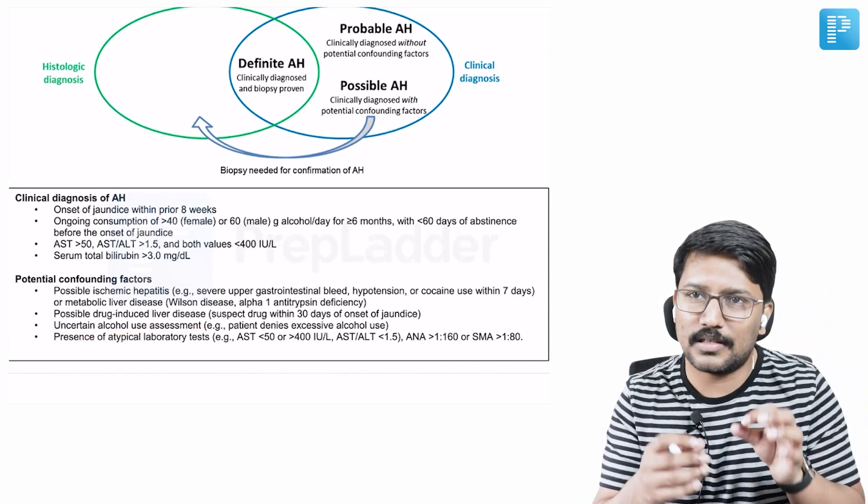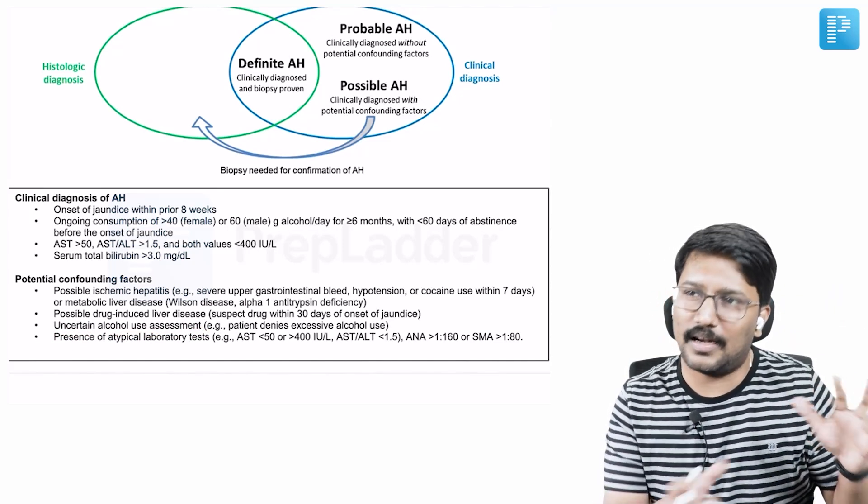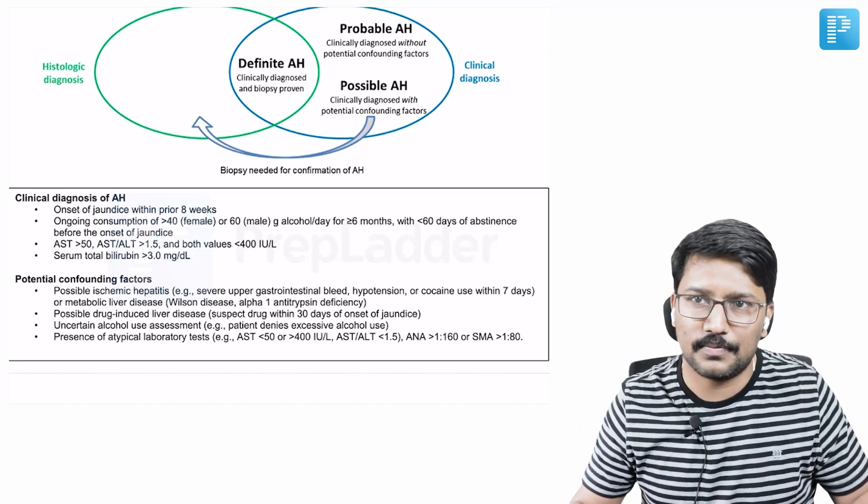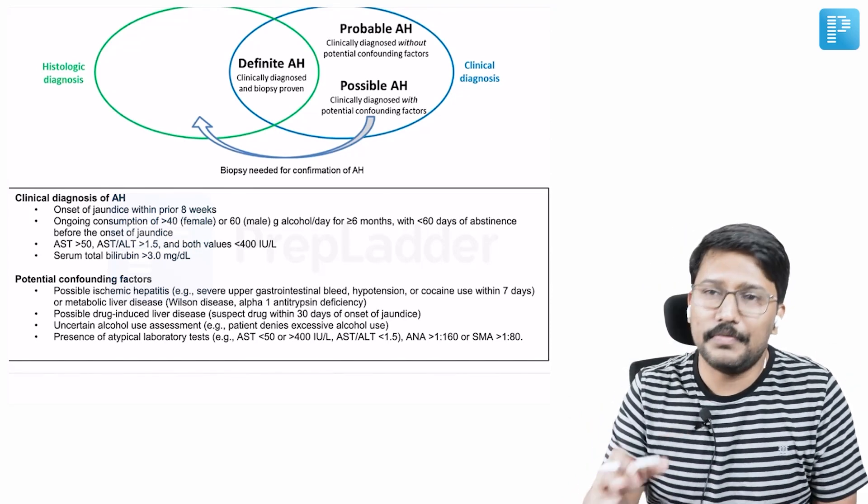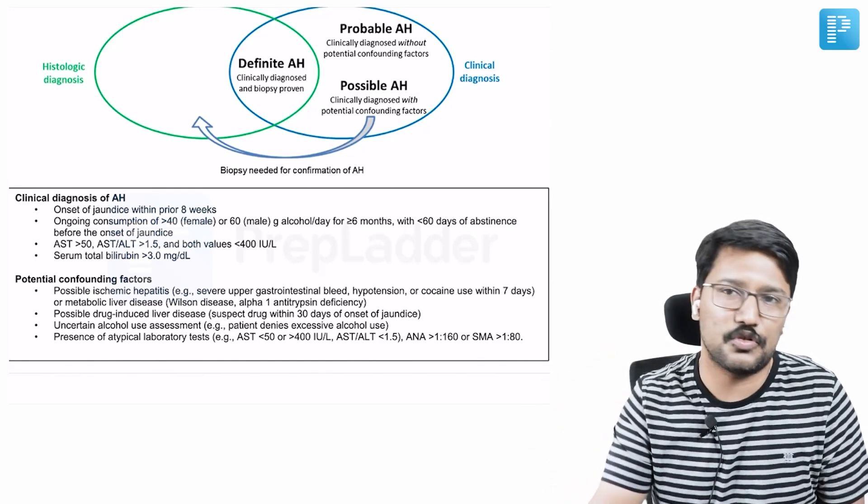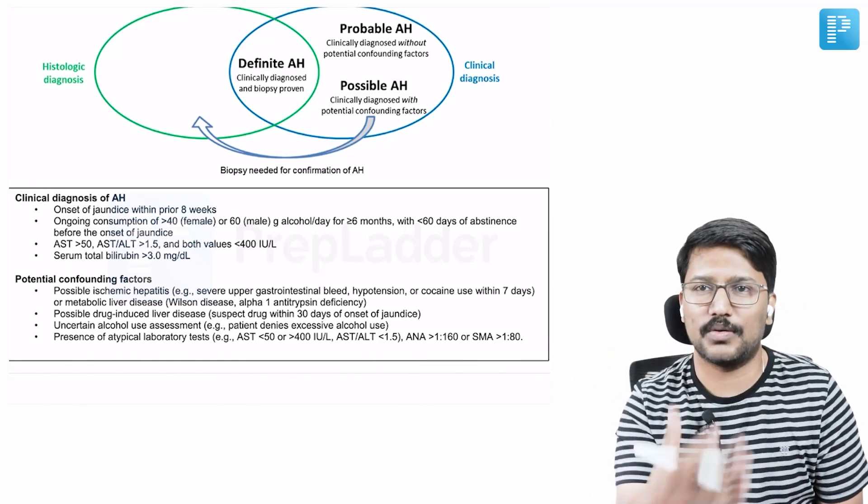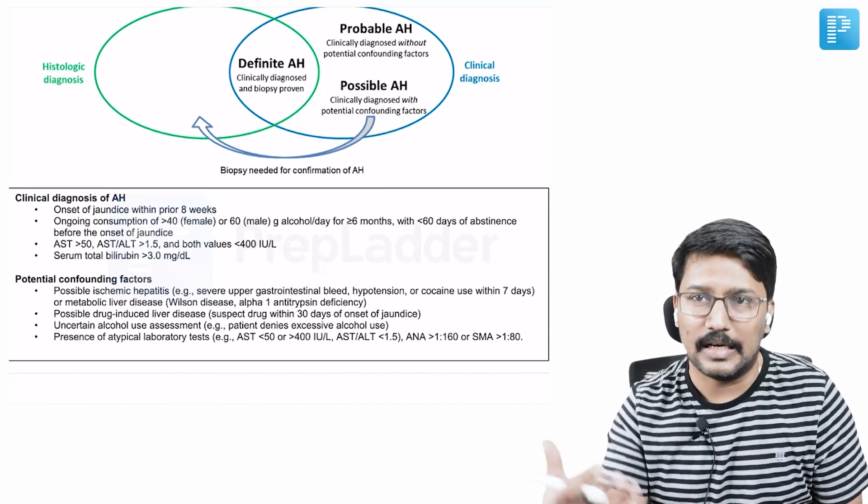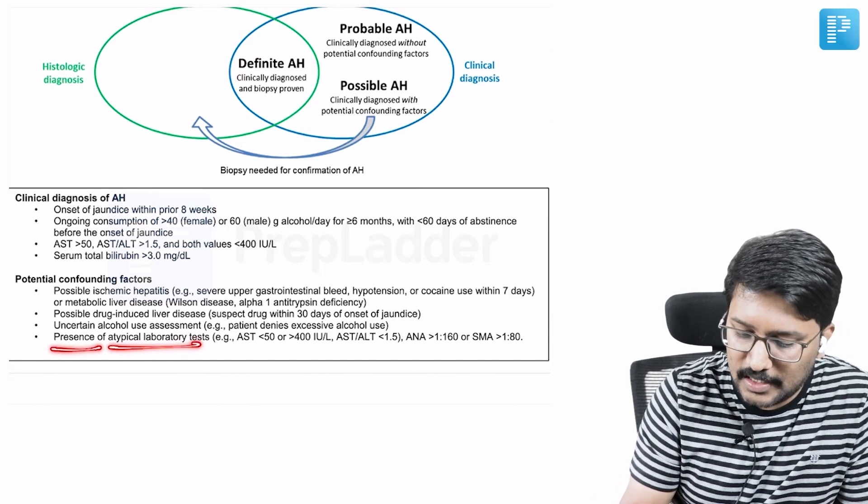Then comes uncertain alcohol use assessment. Now, exposure to alcohol is a paramount important criteria for the diagnosis. Be it the ACG guidelines, which says that at least within 8 weeks there should be exposure to alcohol - longer than 8 weeks abstinence shouldn't be there. Similarly, the 2016 consensus statement says that there should be ongoing alcohol exposure. If there is no clear cut history of alcohol exposure, a patient denies that he has been consuming alcohol, that becomes a confounding factor. Clinically, you are considering it based on the AST, ALT, and whatever parameters we spoke, that patient denies alcohol consumption and you don't have anything to prove that he was consuming alcohol, then that becomes a confounding factor.